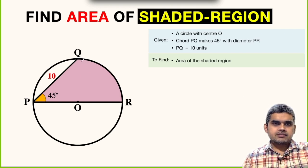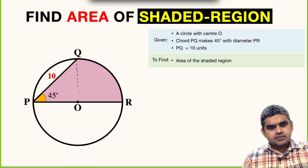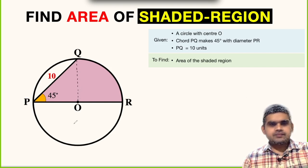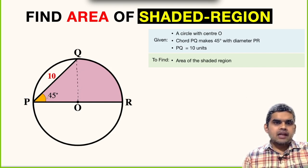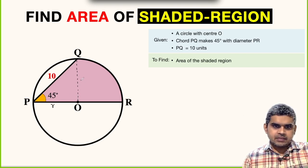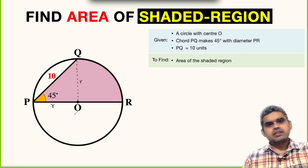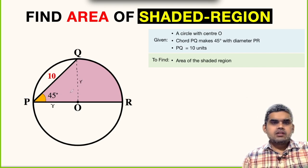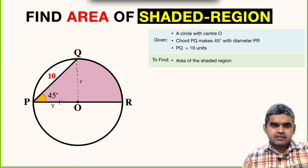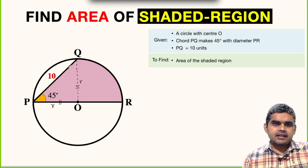First of all, we will do one construction here. Let us join O and Q. So OQ and OP will be equal because both of them are radius of the circle. Triangle OPQ will be an isosceles triangle, that means this side is equal to this side.